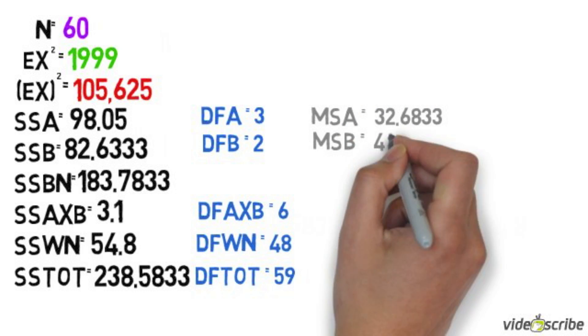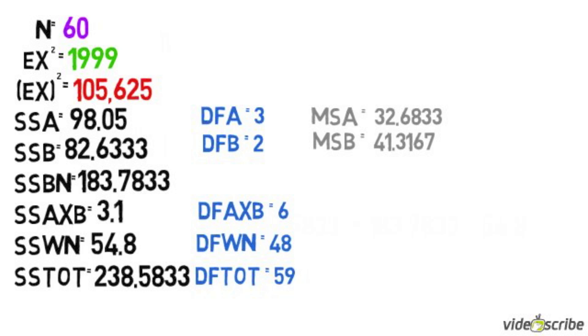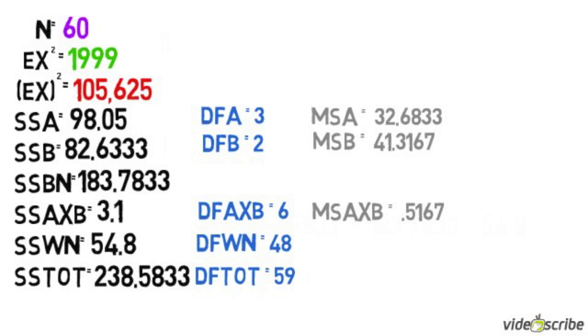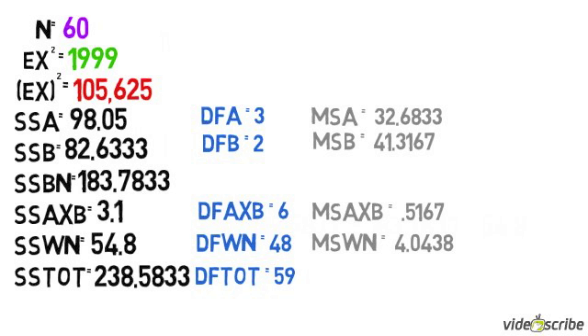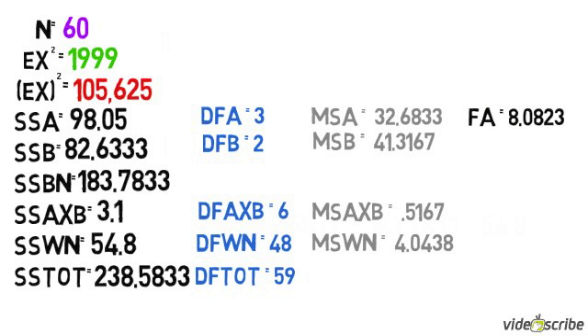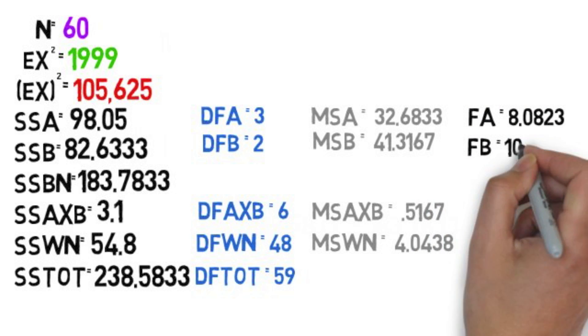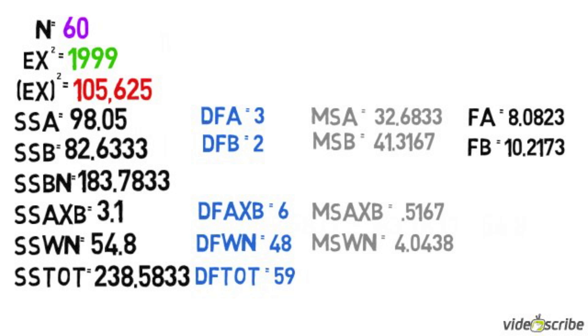For mean of squares, you take the sum of squares and divide it by the degrees of freedom. Now let's get to F obtained. You take the mean squares A, B, and the interaction, and divide it by the mean squares within. And that gives you F obtained.